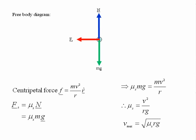Alternatively, we could say that the maximum speed is given by the square root of μsRg.